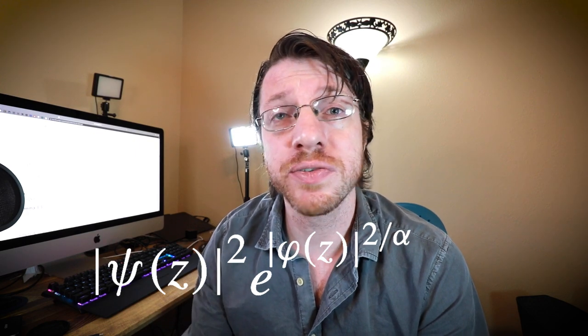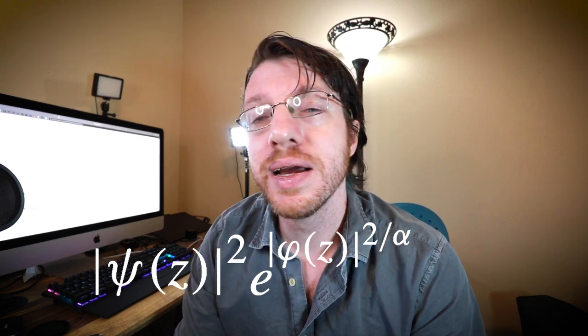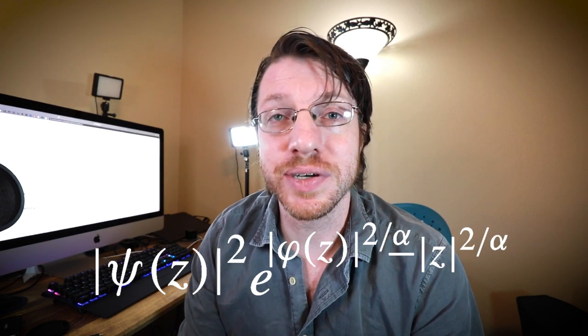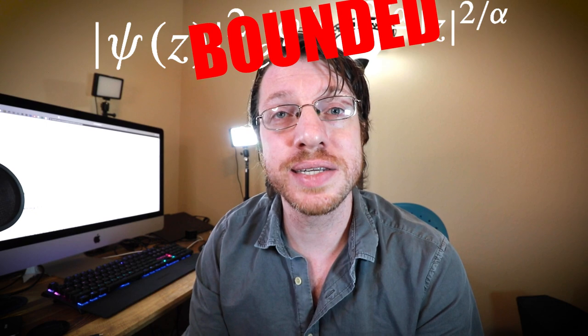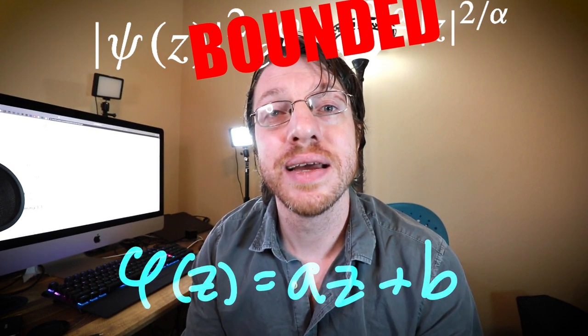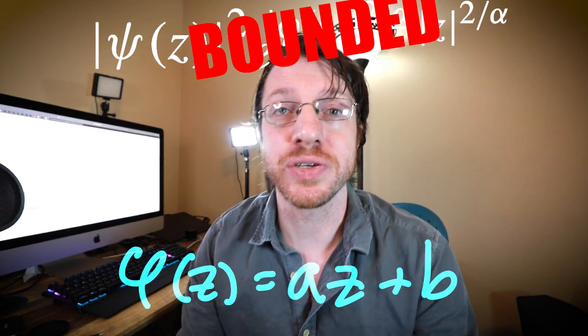So classically, we have this theorem by Liouville, which basically says that if you have a bounded entire function, then it must be constant. And so this theorem that we came up with sort of goes with the same theme, except our upper bound is a little bit more complicated. So the bound ends up being the magnitude of some Psi of Z squared, where Psi is some entire function. Don't worry about it. It's not really that important for this. Then we have this multiplied by E to the magnitude of Phi of Z raised to the 2 over alpha for some alpha between 0 and 2 minus the magnitude of Z raised to 2 over alpha. And if this ends up being a bounded quantity, then Phi must be affine or a linear function.